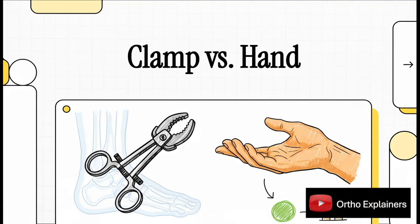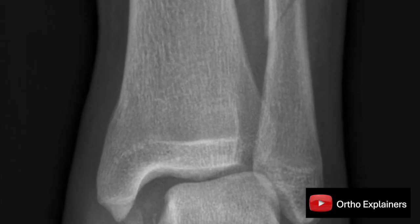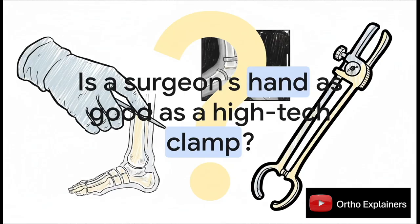All right, welcome. Today we are stepping right into the operating room for a fascinating contest, a real classic showdown, a high-tech tool versus the surgeon's own two hands. So let's get right into it. Here's the big question we're tackling. When a surgeon is putting a really badly broken ankle back together, is a special, super powerful clamp actually any better than just the simple tactile feel of their own thumb? It's a question that really pits technology against pure technique.